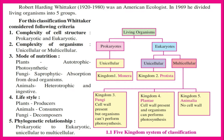3. Mode of nutrition: Plants — Autotrophic, Photosynthetic; Fungi — Saprophytic, absorption from dead organisms; Animals — Heterotrophic and Ingestive. 4. Lifestyle: Plants — Producers; Animals — Consumers; Fungi — Decomposers. 5. Phylogenetic relationship: Prokaryotic to Eukaryotic, Unicellular to Multicellular.